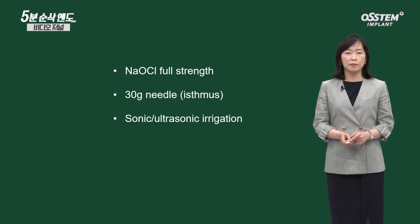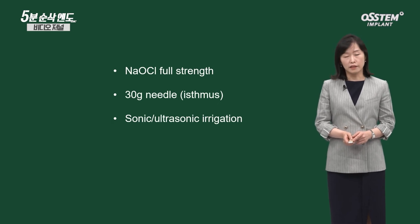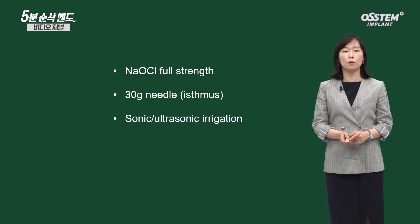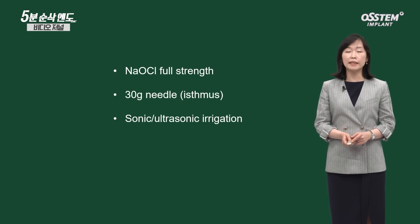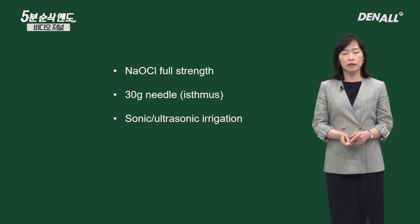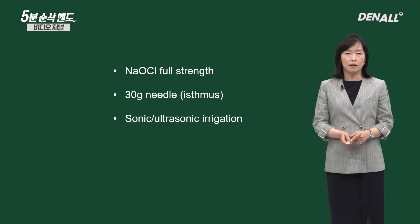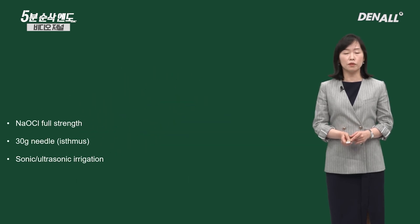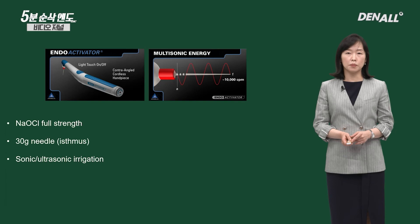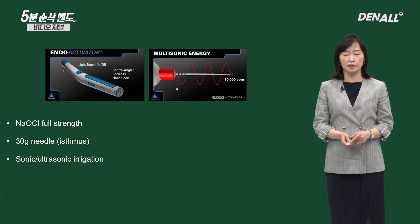How can we remove pulp tissue and microorganisms perfectly? After removal, how can we seal it completely? These are the two factors that lead to successful endodontic treatment. Here is my clinical tip: when I do endodontic treatment on C-shaped root canal, I use full-strength NaOCl 5.25% — that is, 100%. I use a very thin 30-gauge needle to address the isthmus. I also use sonic and ultrasonic irrigation to increase the success of endodontic treatment. Endoactivator is a sonic product with a plastic fiber tip, for one-time use, available in different sizes.